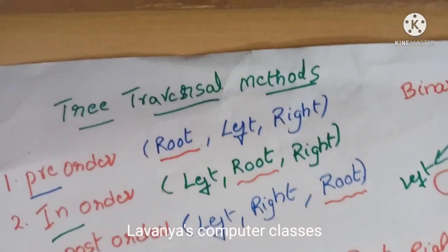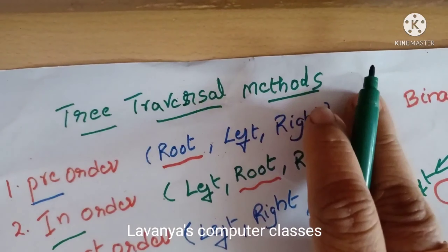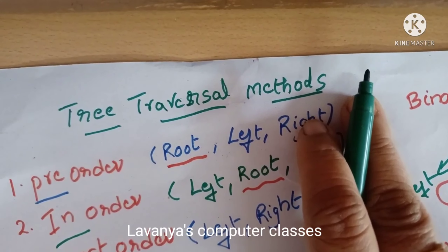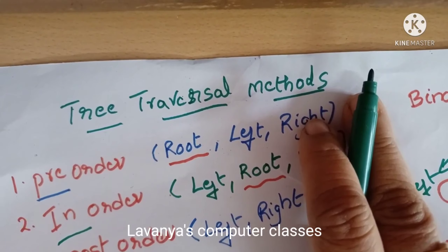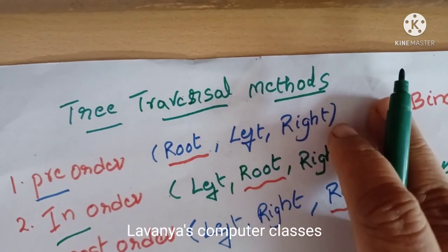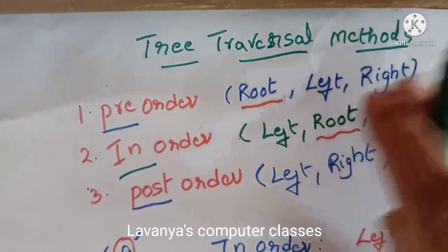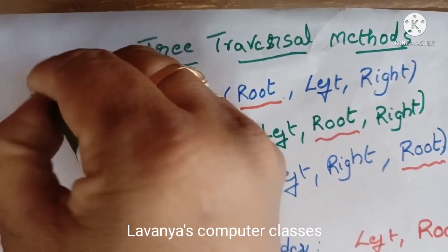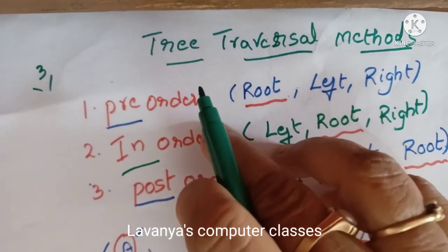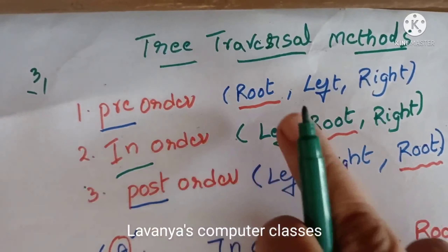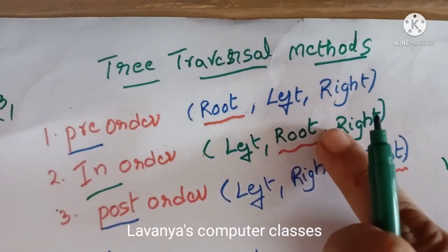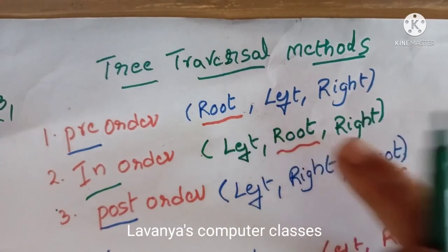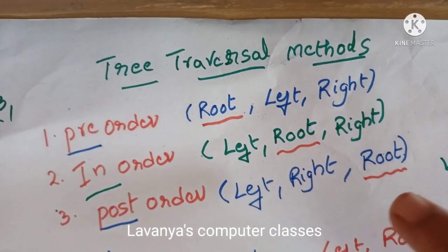Tree traversal method means we can move or visit each and every vertex in a specified order. There are three tree traversal methods: pre-order, in-order, and post-order. Pre means beginning, in means middle, and post means last — and in each case it refers to where the root is visited.